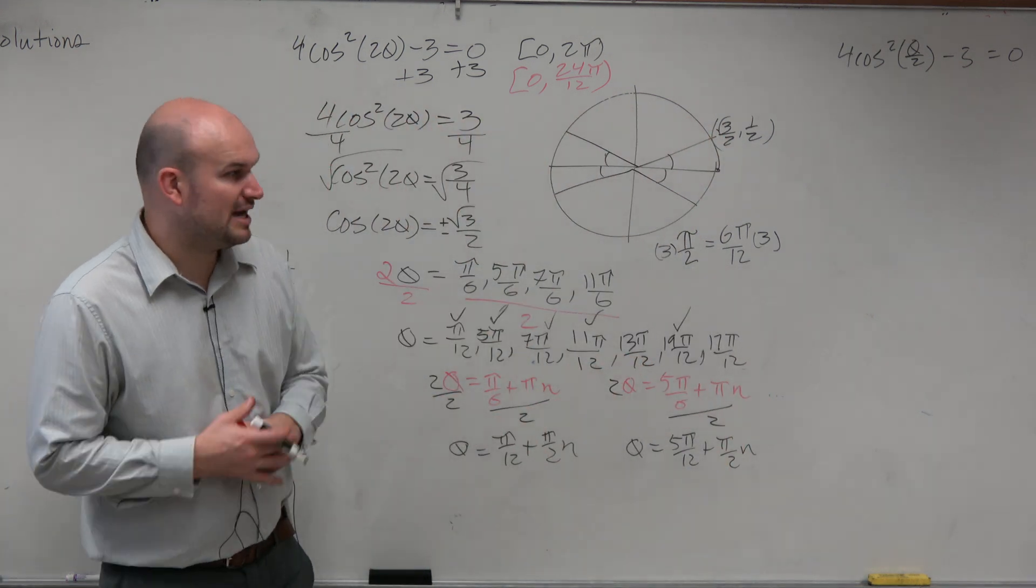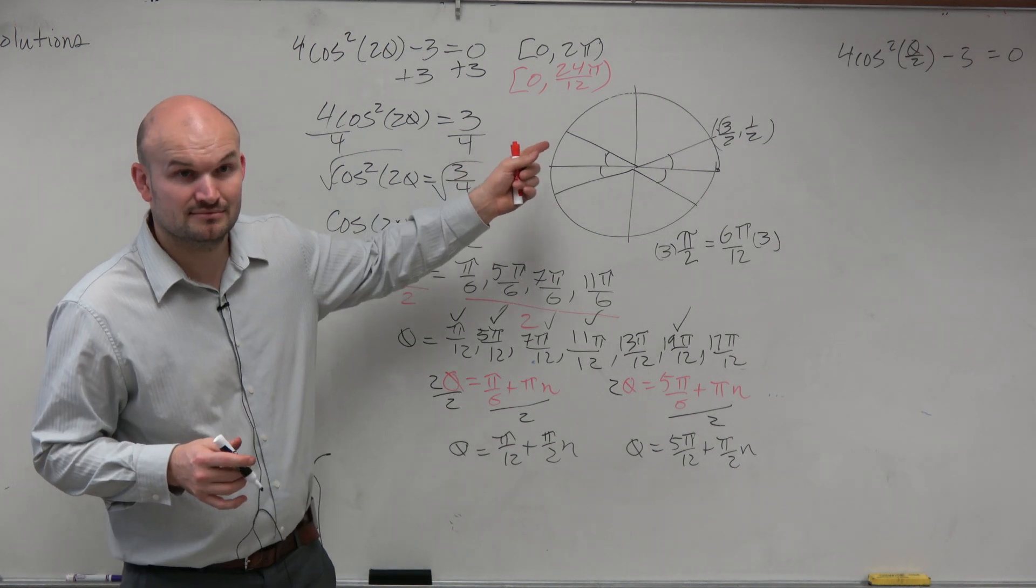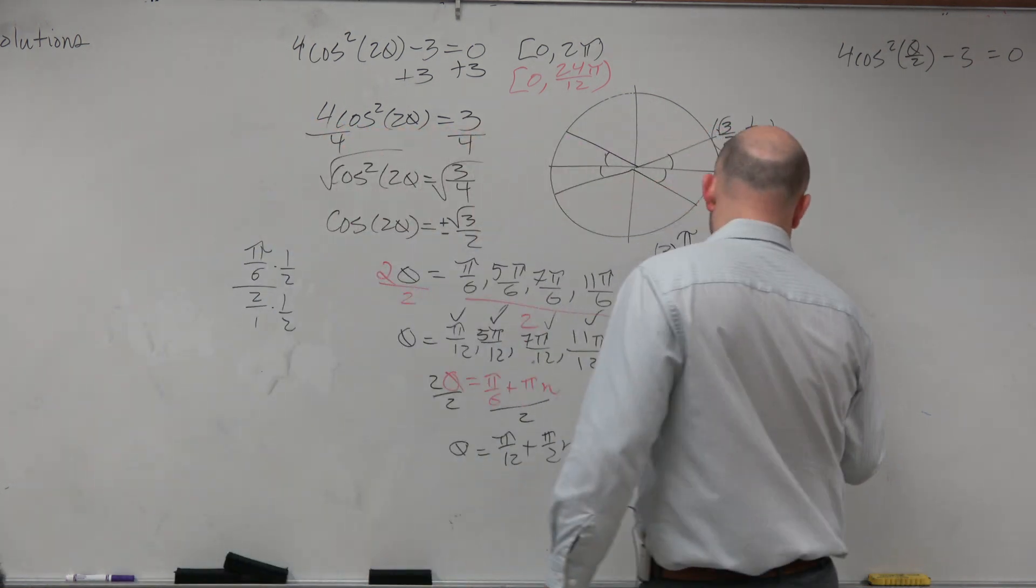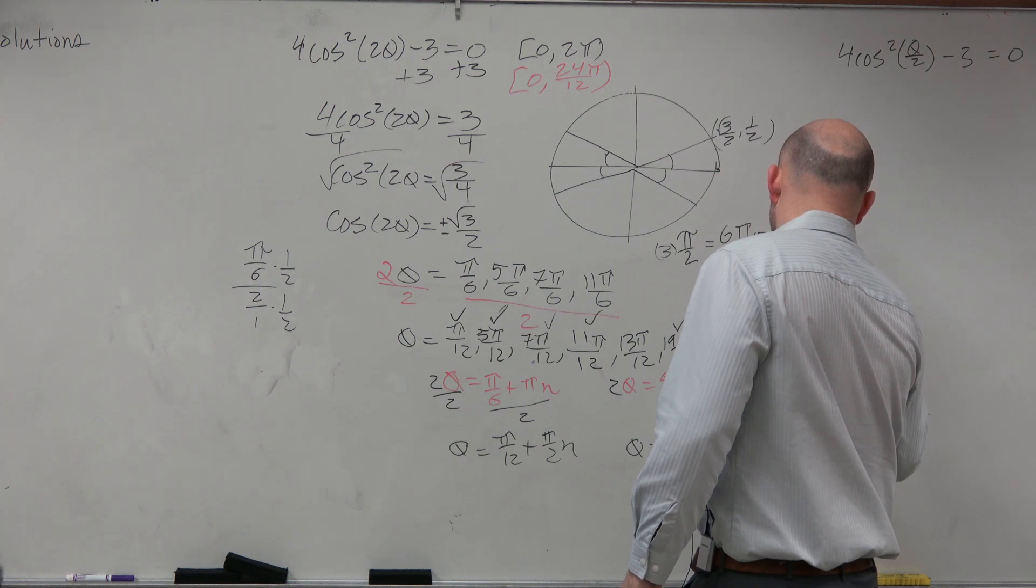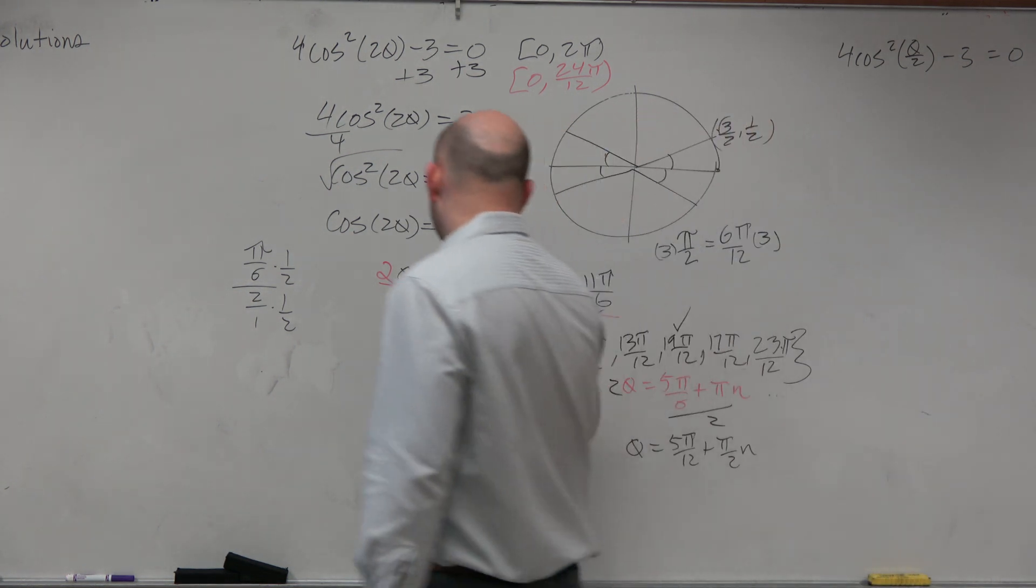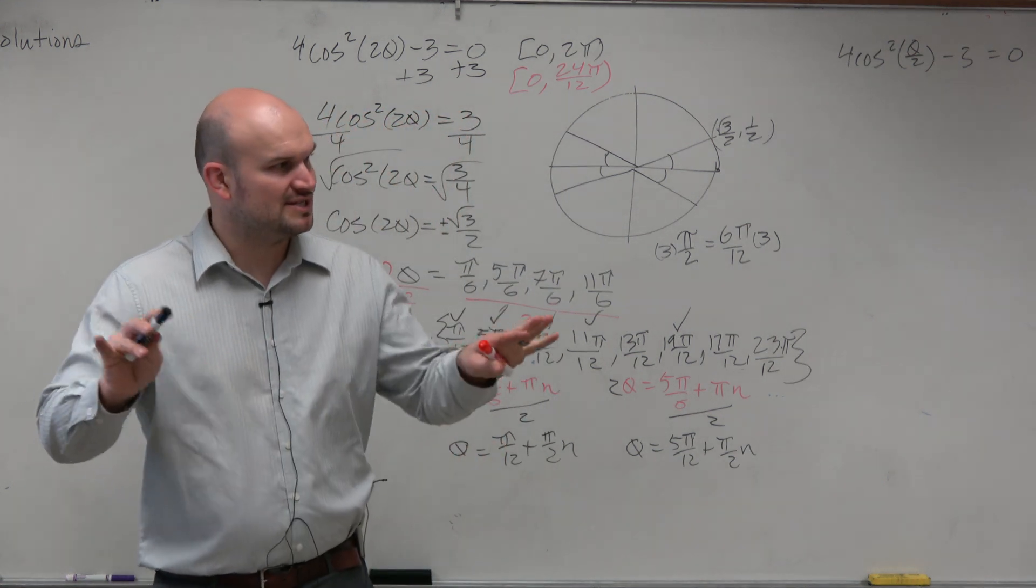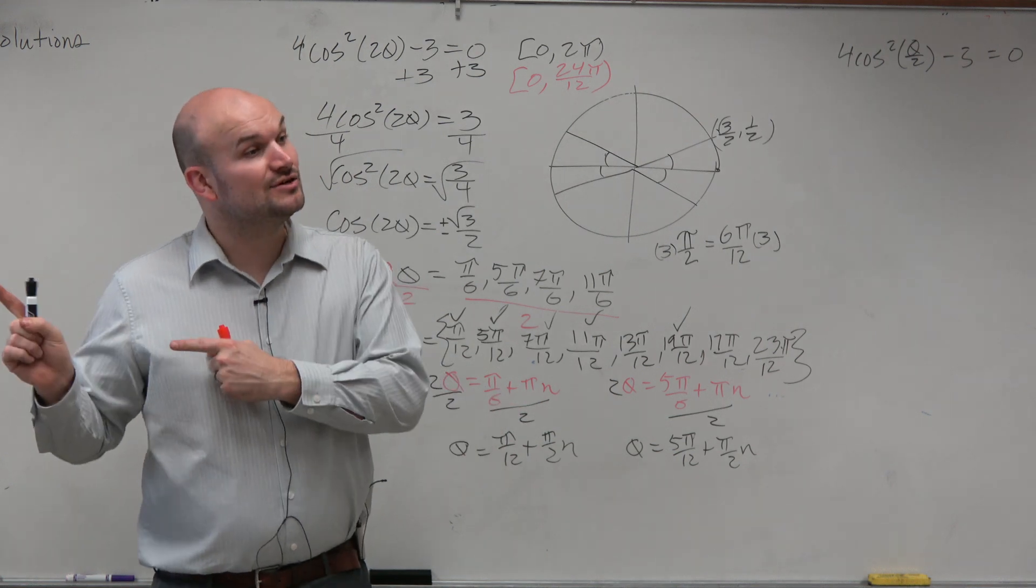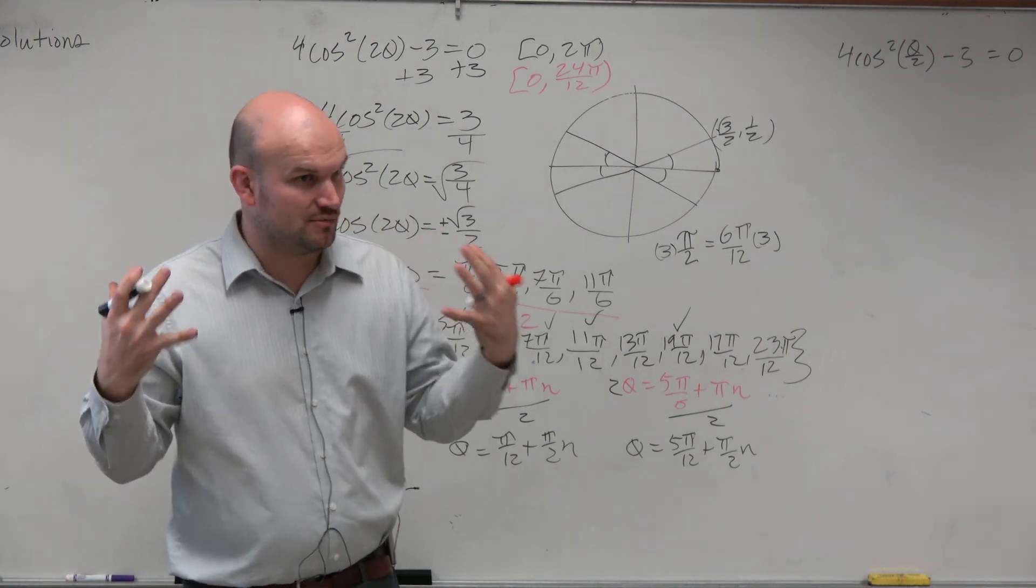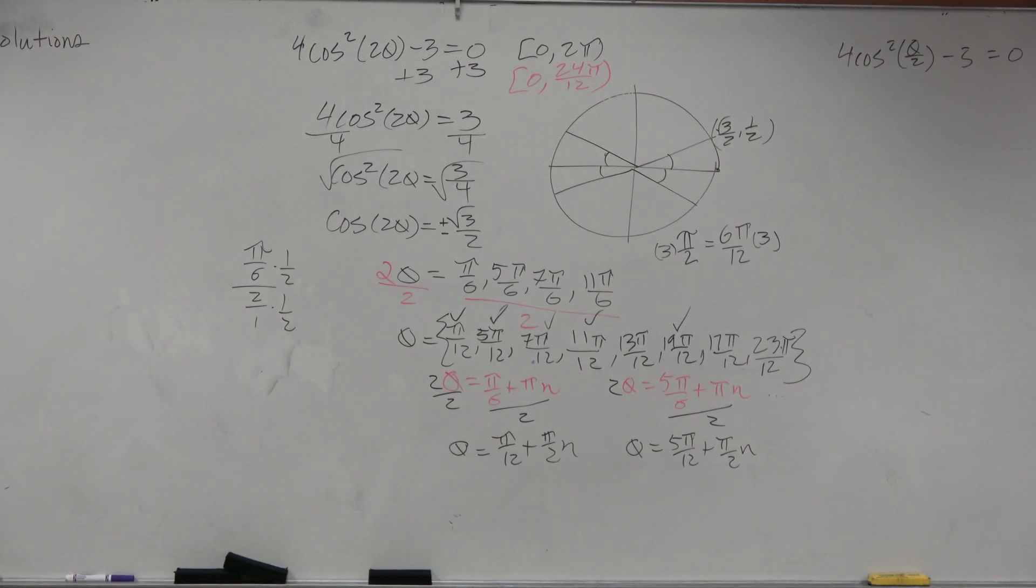And then let's add 6 pi over 12 again. We get 23 pi over 12. Is that an answer? Yes. Yeah, of course it is. And that, ladies and gentlemen, is all the solutions. No, there are not four solutions. There are eight solutions. Now, before you start saying how did you do that, let's go and take a look at the graph so it can make some more sense. Wait. How did you do that?